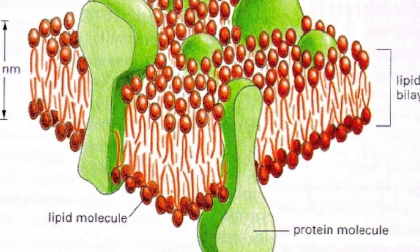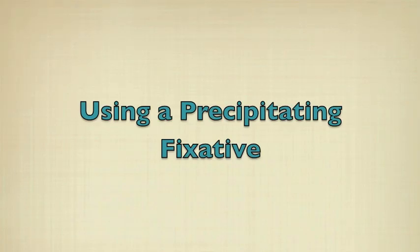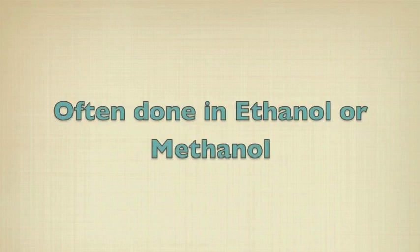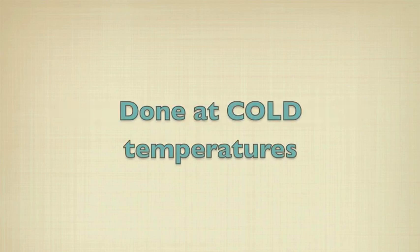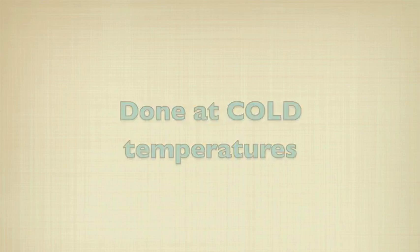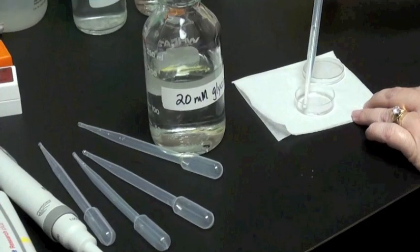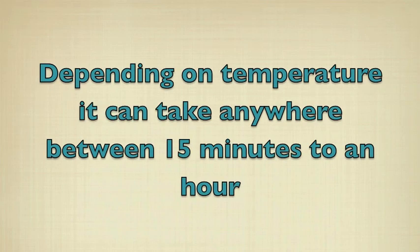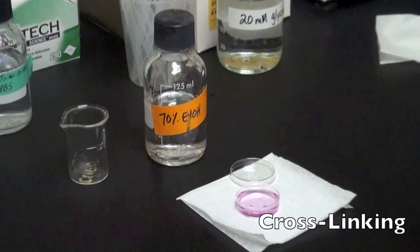When we go to fix a cell with a precipitating fixative, this can often be done in ethanol or methanol, and we also do this normally at cold temperatures. You would replace all of the media in your sample vial with your fixative, and normally depending on what temperature you perform the fixation at, it can take anywhere from 15 minutes to an hour.